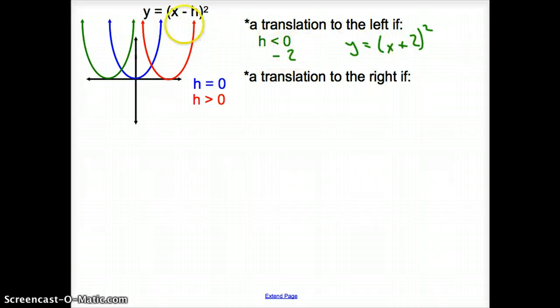So it would be a translation to the left if we had a negative 2, plugging negative 2 in would make it a positive 2. But we would have a translation to the right if h was greater than 0, because then it would just be h minus 4, h minus 5.